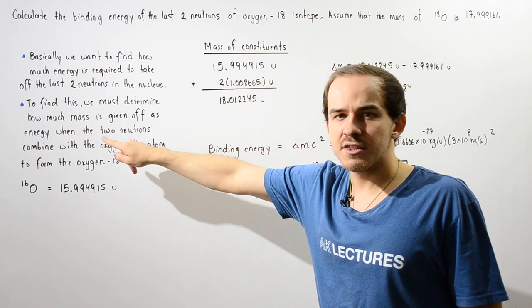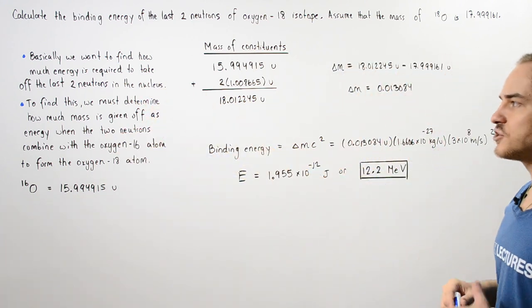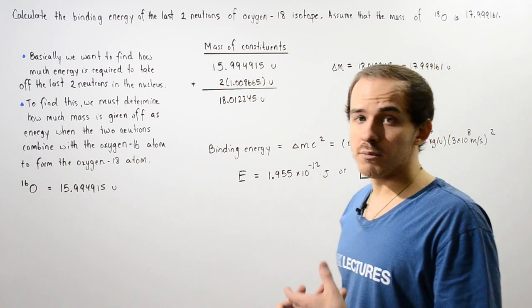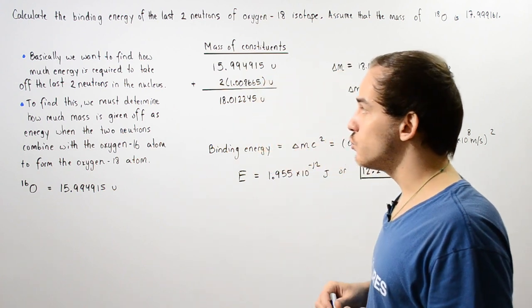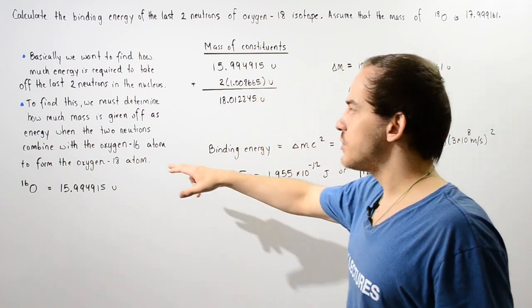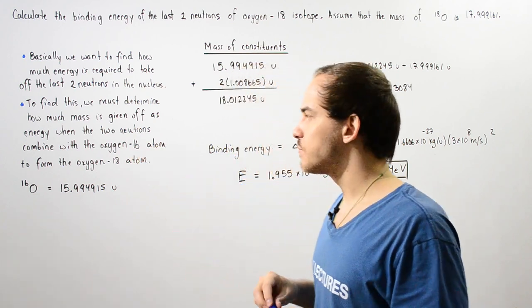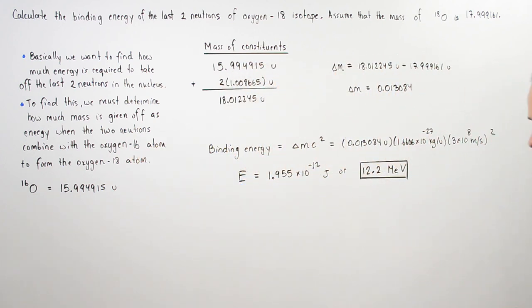To find this, we must determine how much mass is given off in the form of energy when the two neutrons are combined with the oxygen-16 atom to form the oxygen-18 isotope.